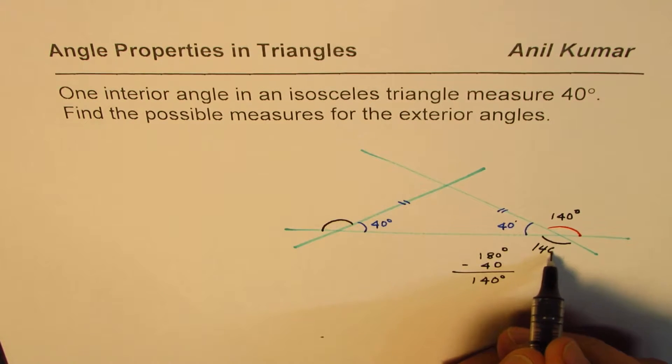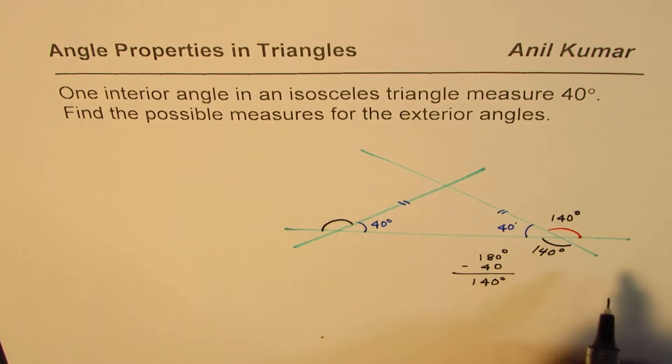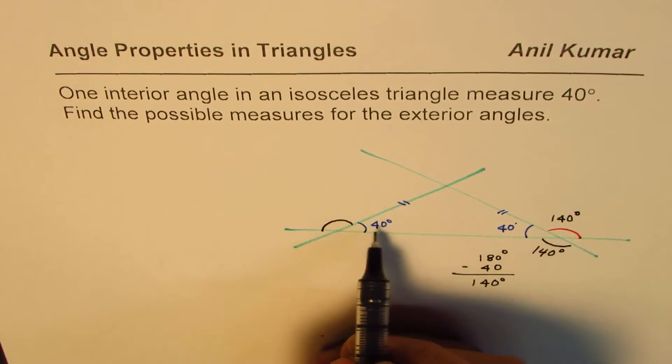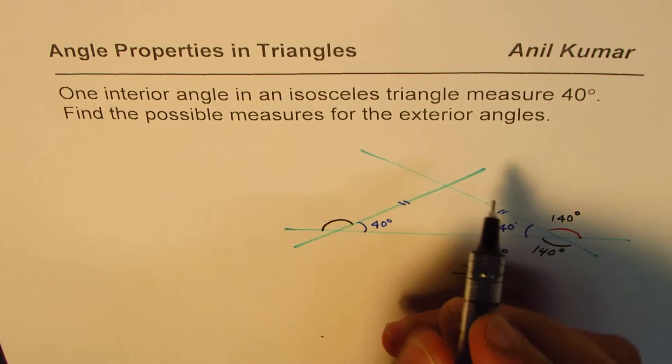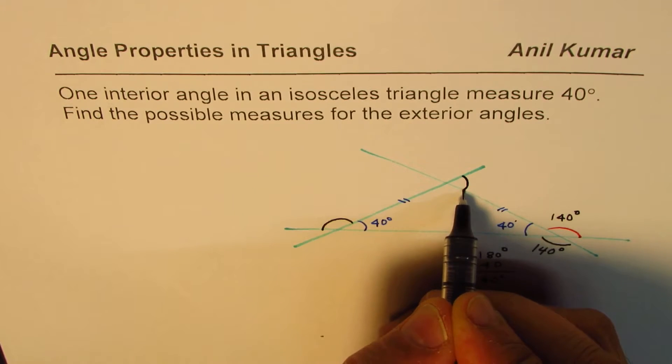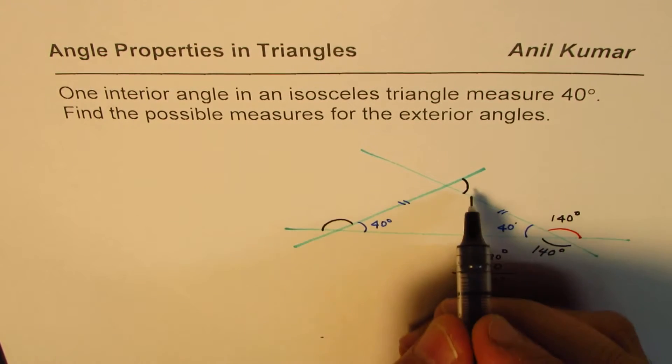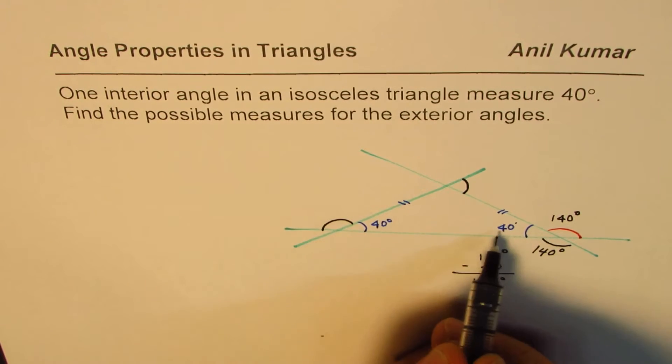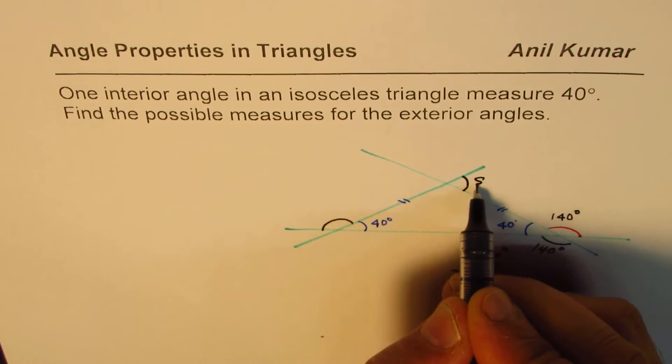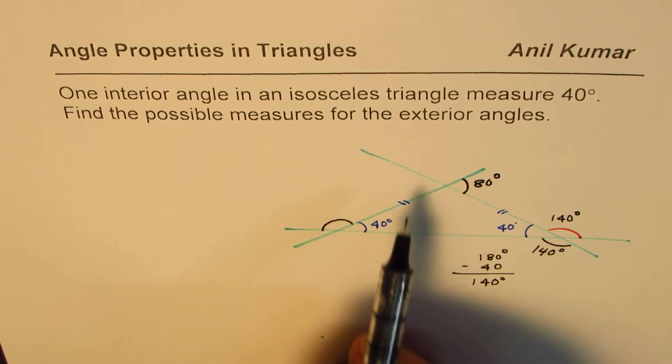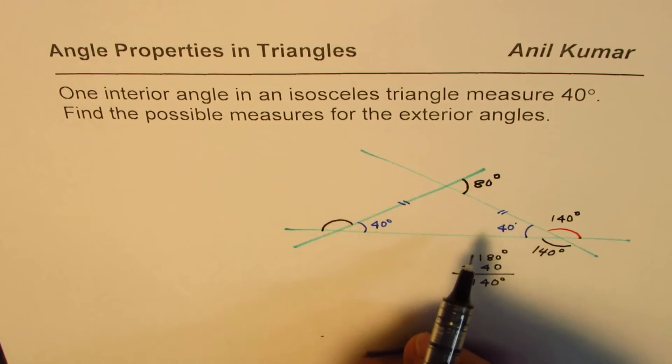Now if these two angles are 40, how about that exterior angle? This exterior angle should be the sum of these two, so this would be 80 degrees. So the possible exterior angles are 140 degrees, 80 degrees, and 140 degrees.